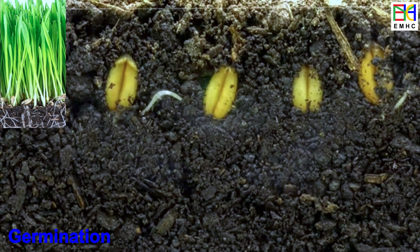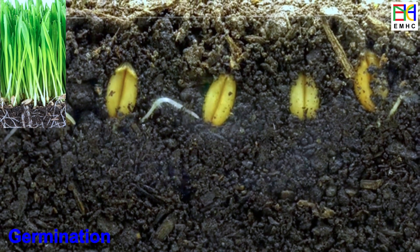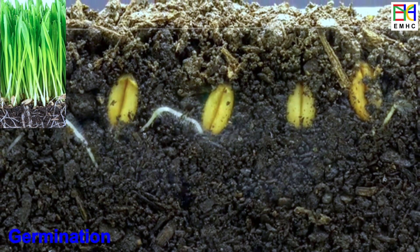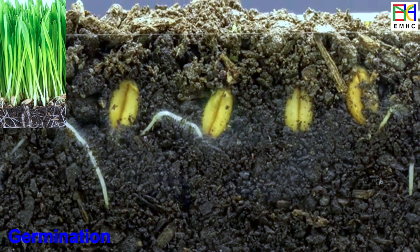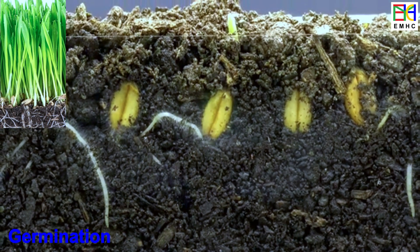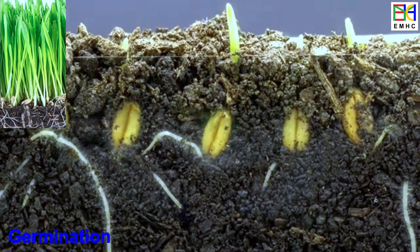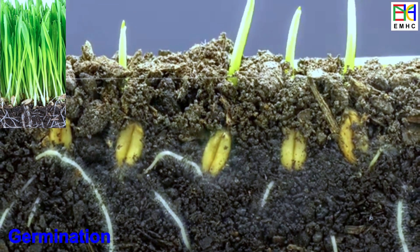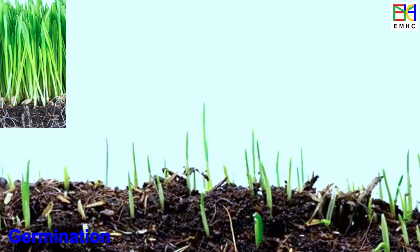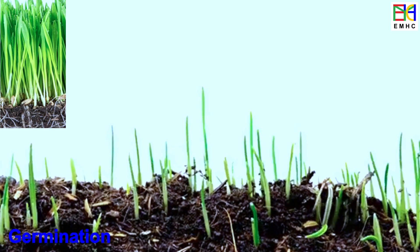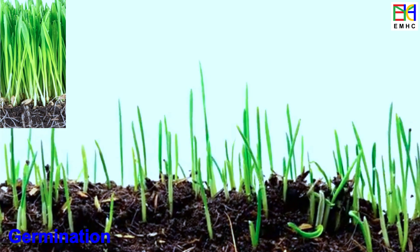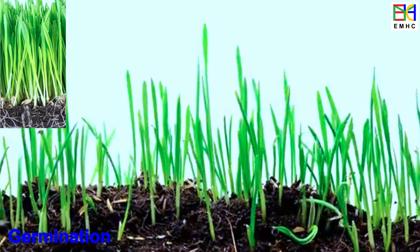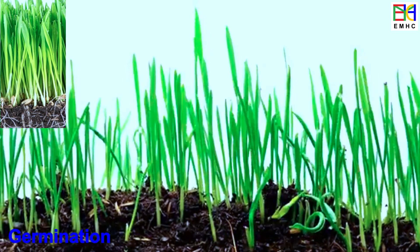The first growth stage of wheat is germination, or emergence, which takes place within a few days to a week after planting. Germination is the process by which the seed sprouts and begins to grow. As the seed sprouts, the embryo plant emerges from the seed coat and pushes through the soil. This stage usually takes about seven to ten days.